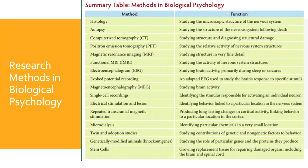Let's move on to the different methods in biopsych. In conducting experiments and studies, there are many methods that can be used. For example, histology — studying the microscopic structure of the nervous system, including the parts of the cell and neurotransmitters. We also have autopsy, CT and PET scan (computerized tomography and positron emission tomography), magnetic resonance imaging (MRI), functional MRI, electroencephalogram (EEG), and much more. Please read about the different functions of these methods in studying biopsych.